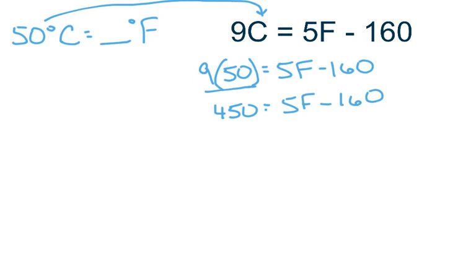Now the only thing else I can do is move the 160 to the opposite side. So to do that, you have to do the opposite math. So I'm going to add 160 to both sides. So here I get 450 plus 160, and I believe that's 610, equals 5F.